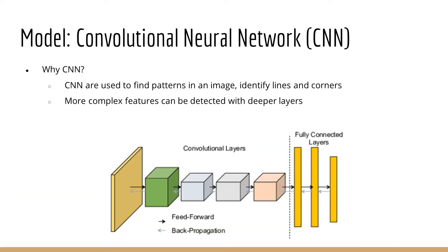The model that we decided to use was convolutional neural networks, also known as CNN. It is a popular deep learning model that is especially effective in image classification. CNNs are used to detect patterns in images by identifying features such as lines and corners, and as the number of layers increase, more complex features can be detected.